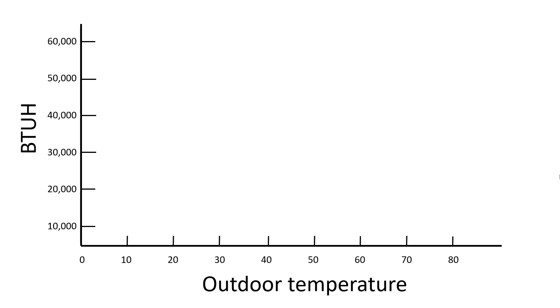First we need to do a heat loss calculation for the house. Here in Seattle we use a delta T of 50, so we're looking at an outdoor temperature of 20. So we're going to draw a line straight up from 20 degrees and we've calculated the heat loss on this house. We're going to say 40,000 BTUs per hour when it is 20 degrees outside.